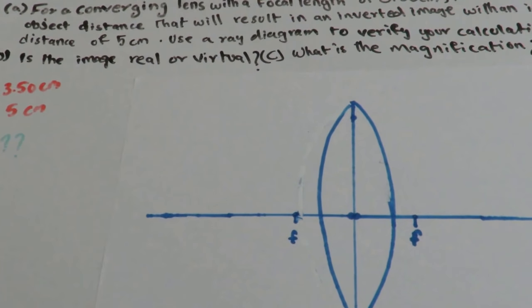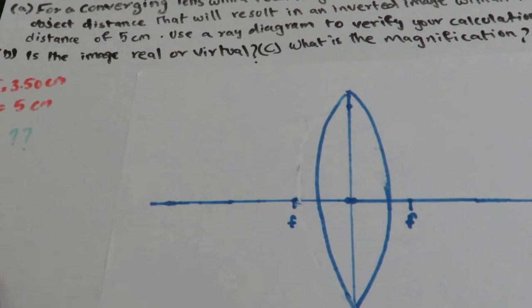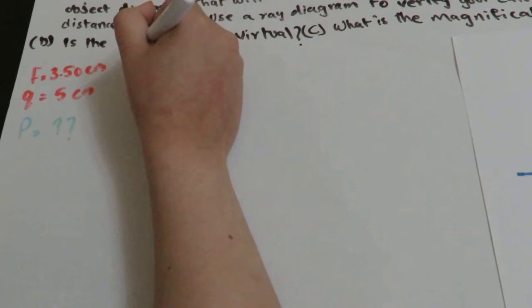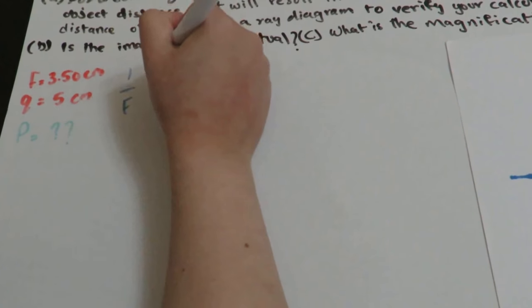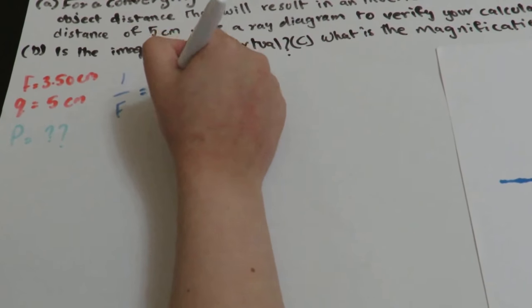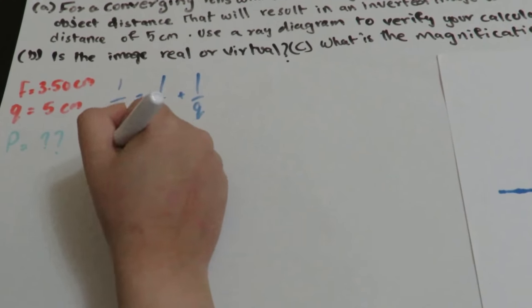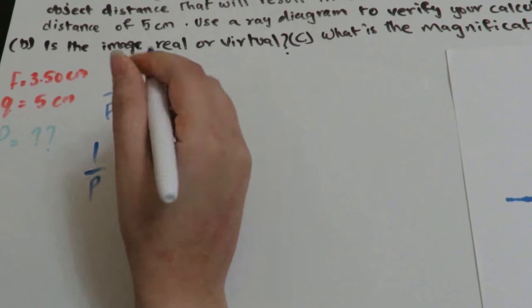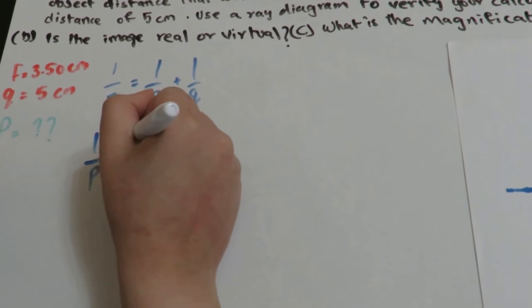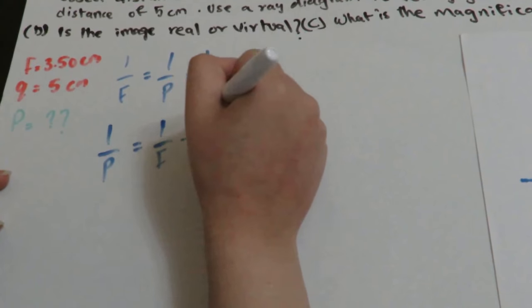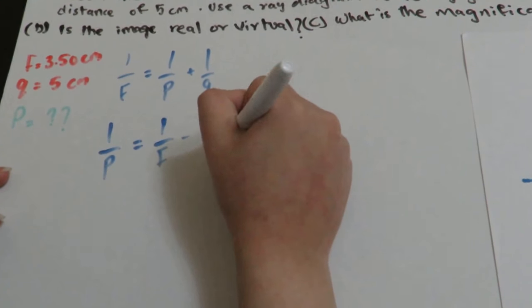To find P, we are going to use the lens equation, which is 1 over F equals 1 over P plus 1 over Q. To find P, we will make the equation 1 over P equals 1 over F minus 1 over Q.